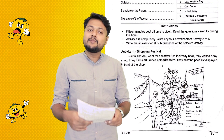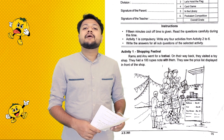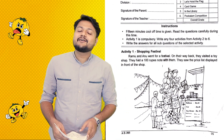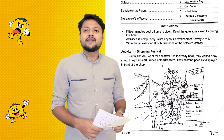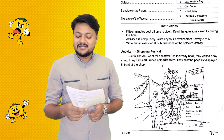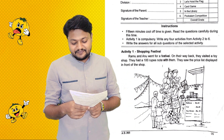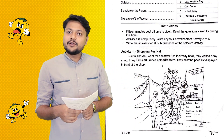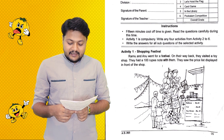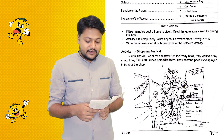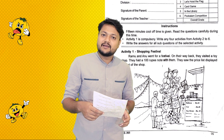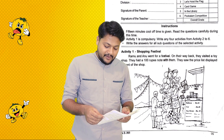That is Ramu and Anu. They went to a toy shop and looked at the price list. The price list showed a balloon, a car, and a toy drum. Let's go to the question.